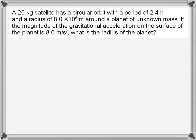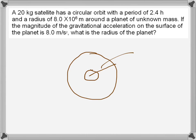A satellite is rotating about a planet of unknown mass and radius. The period of rotation is 2.4 hours and the radius of the orbit is 8 × 10⁶ meters. These two pieces of information are given.